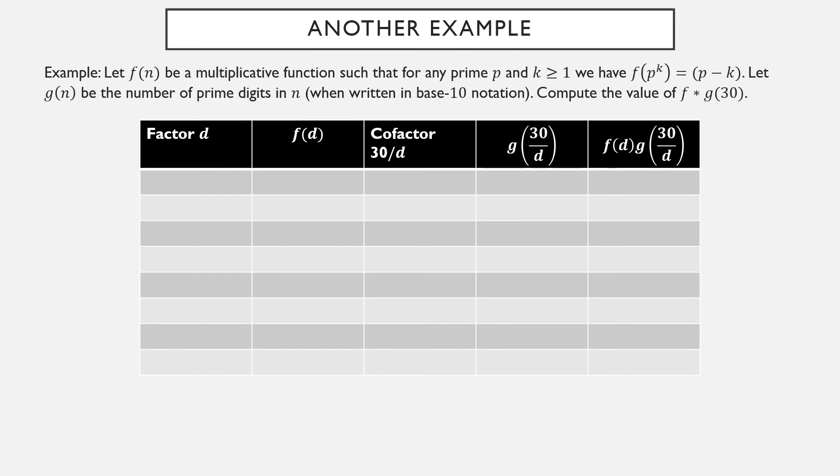The first thing to do, as always, is find the positive factors of the number that we're trying to plug in. The positive factors of 30 are 1 with cofactor 30. I happen to have already made this table have exactly the number of rows necessary. I can also do 2 times 15 or 15 times 2, 3 times 10 or 10 times 3, 5 times 6 or 6 times 5. Now I'm going to compute f.